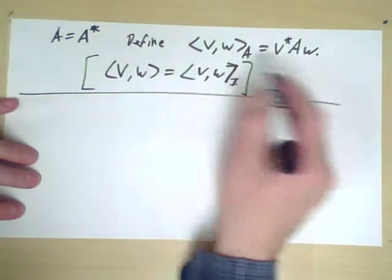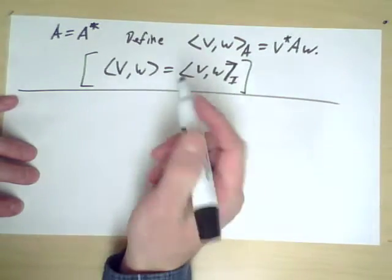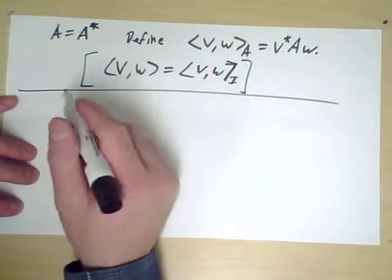So why is it that I should call this an inner product? Why is this a reasonable operation to do? Well, the thing is that it satisfies the key properties that we want an inner product to have.